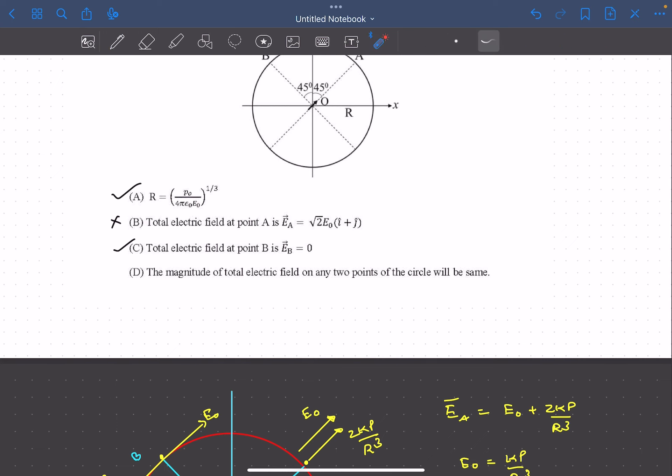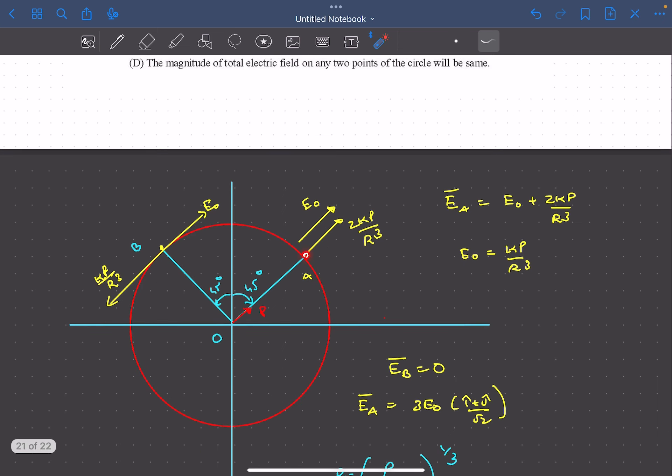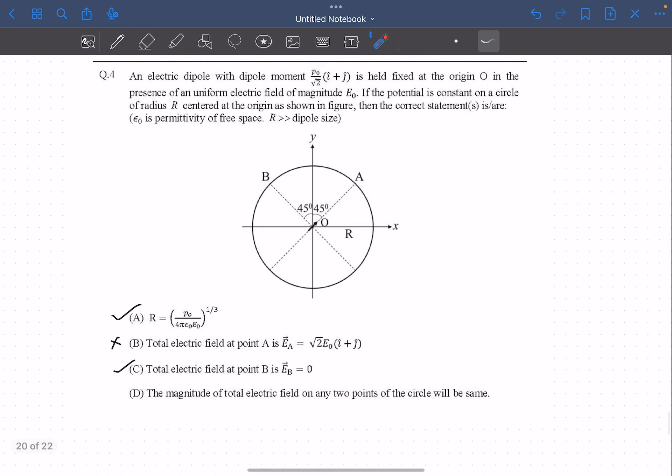Hence that's our answer as well. Option D says that the magnitude of the total electric field at any two points on the circle will be the same. This is clearly not true because we just proved using points A and B that the electric fields at those two points are different. So option D is rejected, and the answer is options A and C.